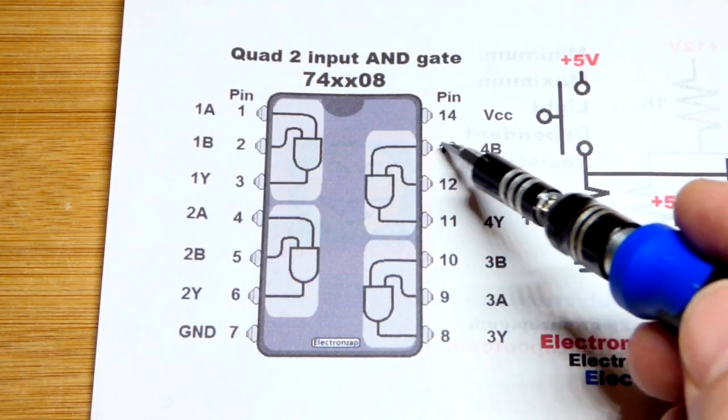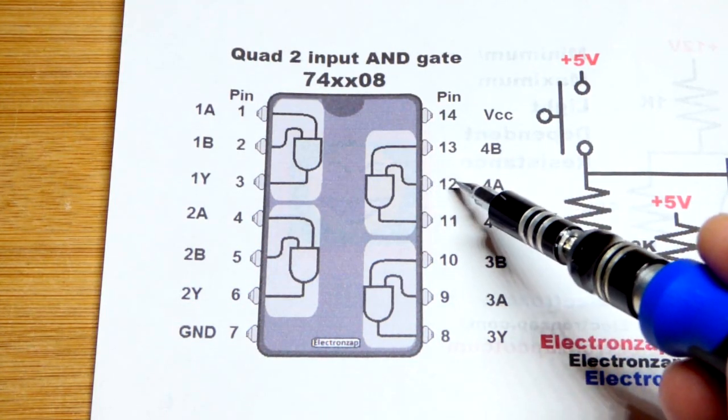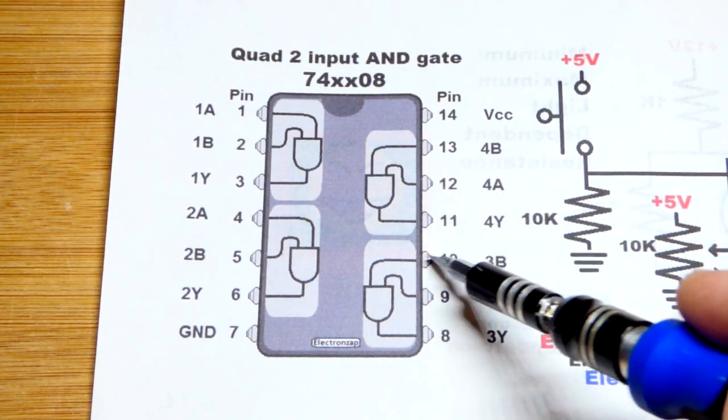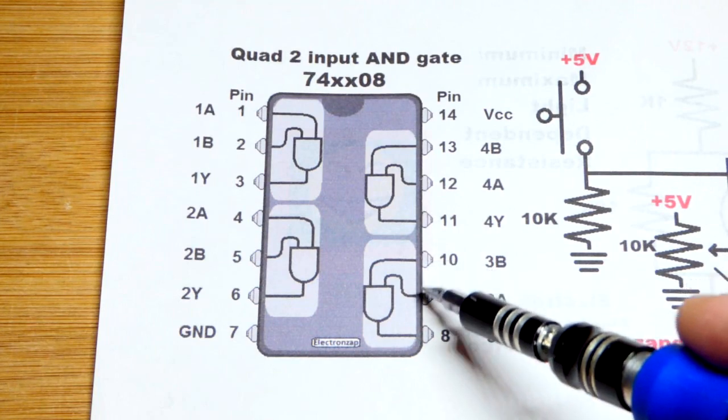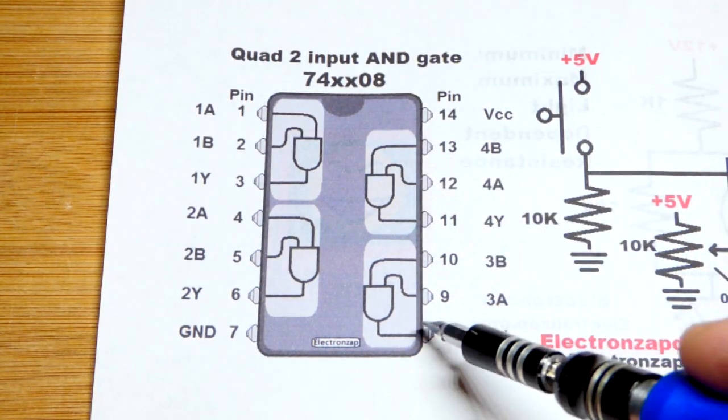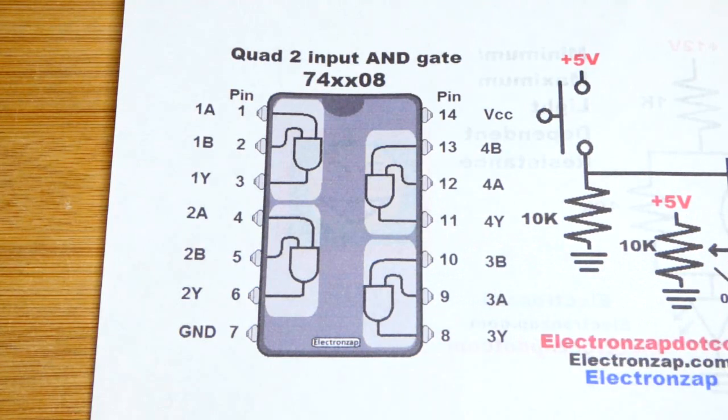You are going to see though, that their inputs, I'll have 13 and 12 to ground, and then 10 and 9 to the positive side of the power supply. That puts a voltage on them, so that the output doesn't oscillate. And that's really what you want to do whenever you have unused inputs.